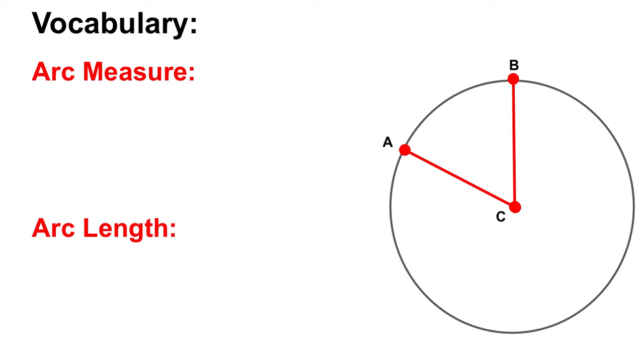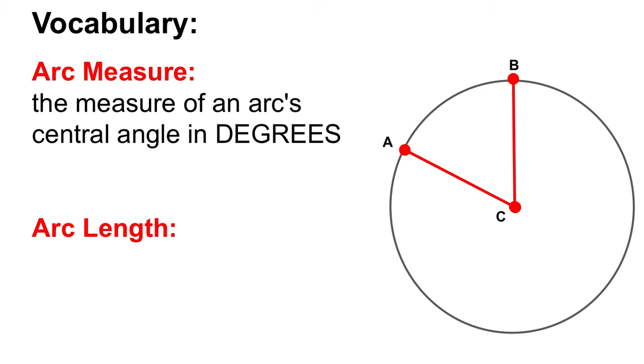So we're going to talk about the difference between arc measure and arc length. Now you should be familiar already with arc measure. That's when you measure an arc in degrees and remember how that matches the central angle. This is what we've been doing for the most part so far. So here's an example where your arc measures 92 degrees.